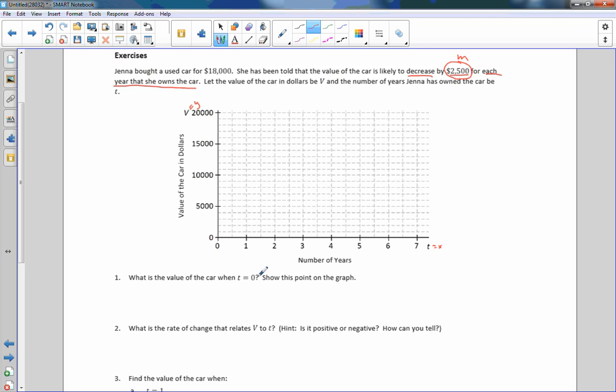What is the value of the car when T equals 0? Show this point on the graph. That's our initial cost. She paid $18,000 for the car. That is the point (0, 18000). These extra commas look confusing. It looks like there's three numbers. So let's not use commas there. This is T, and this is V.